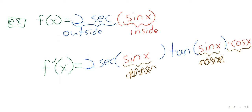Student: I thought the chain rule had to do with three variables. Where's the third function here? Instructor: Chain rule version one involves three variables. Chain rule versions one and two may be formally equivalent, but it might be easier to think of them as two completely different rules. If you have three variables and two equations, use version one. If you have just one composition written down, use version two.